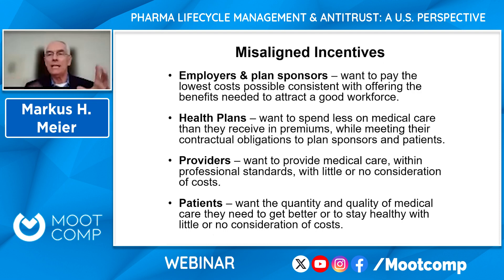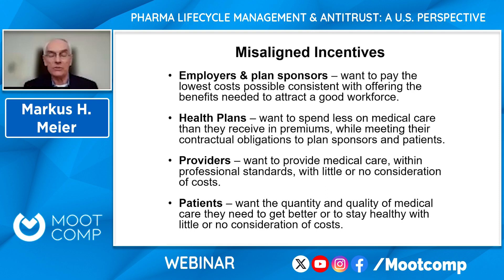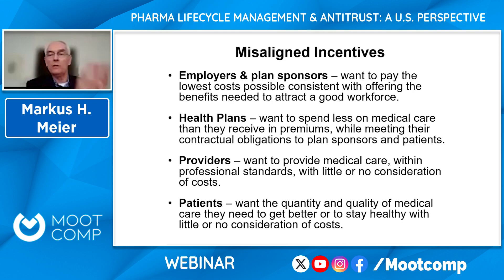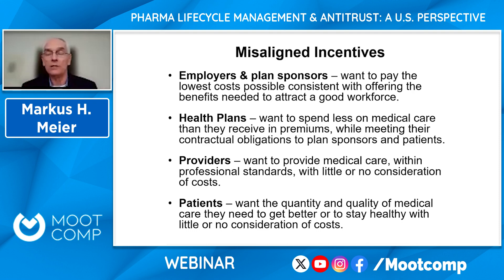Each of these actors who make decisions have different sets of incentives. Generally speaking, employers or the government want to pay as little as possible for drugs. Health plans, the same thing. Doctors — the providers who write the prescriptions — want to give good medical care and don't pay much attention to cost. And patients, when we're sick, want everything we can get and don't pay much attention to costs. So you have a problem where the decision about what to use, what to buy, how much to pay, and who actually uses it are three different sets of actors each with somewhat different incentives.